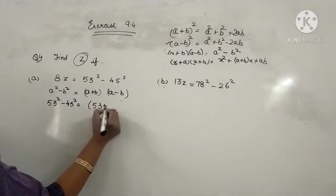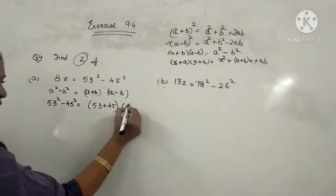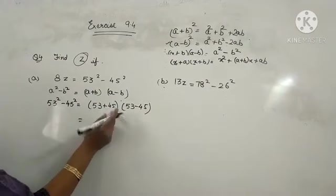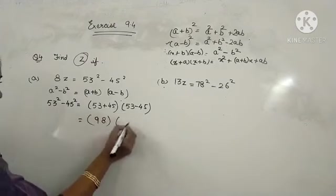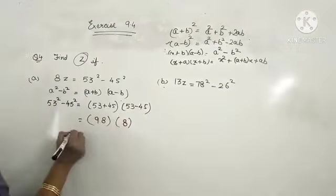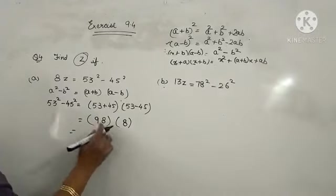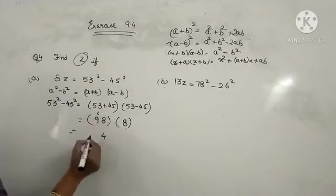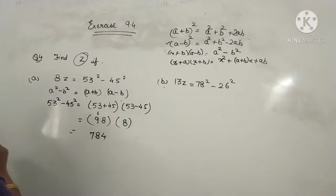53 plus 45 and 53 minus 45. It will be equal to 98 and 53 minus 45, it will be equal to 8. Now multiply this. 8 eights are 64, 6 carry. 8 nines are 72, 72 plus 6 is 78. 784.